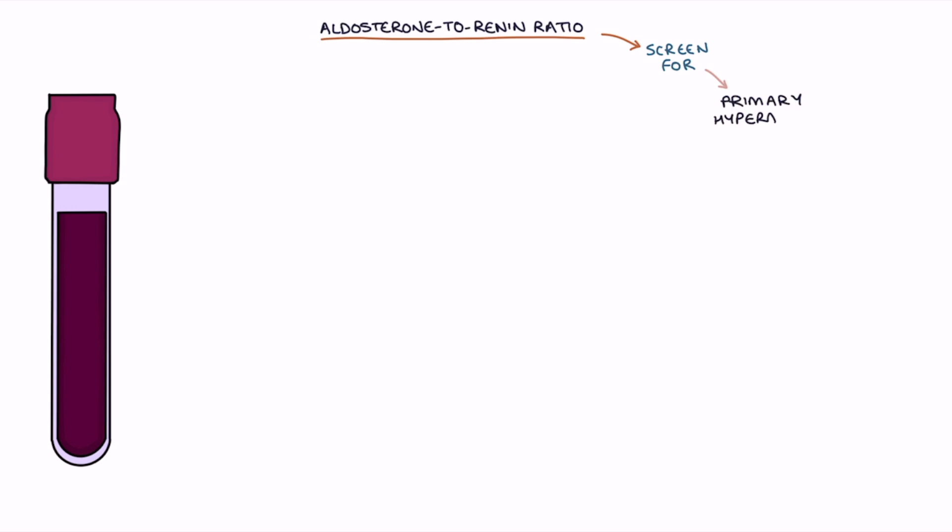An aldosterone to renin ratio blood test can be used to screen for primary hyperaldosteronism. Let's summarize the expected results of aldosterone, renin, and aldosterone to renin ratio in hyperaldosteronism. In primary hyperaldosteronism, the aldosterone level will be high and the renin level will be low as it's suppressed by the high blood pressure. The aldosterone to renin ratio will be high.